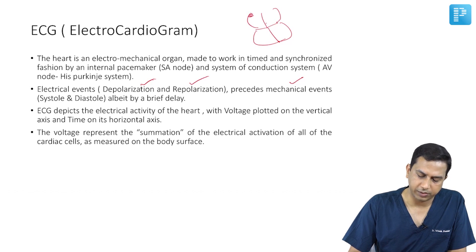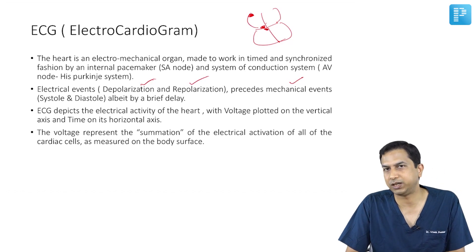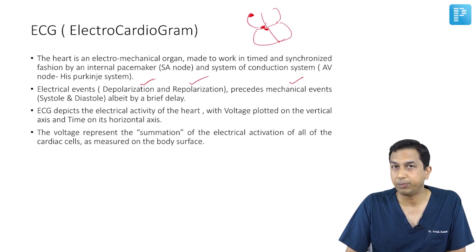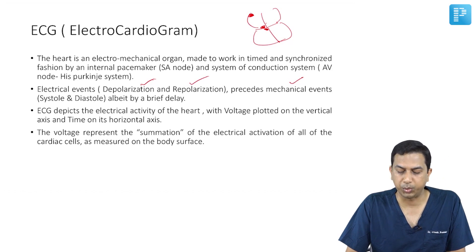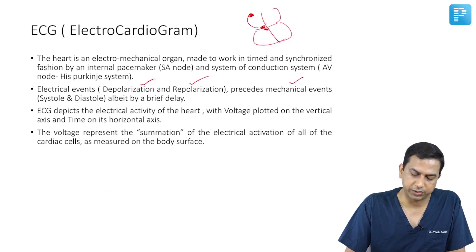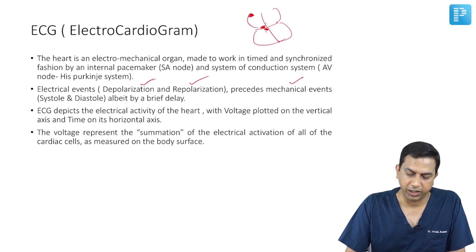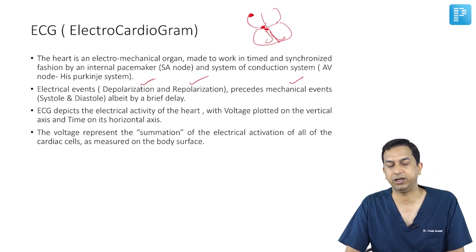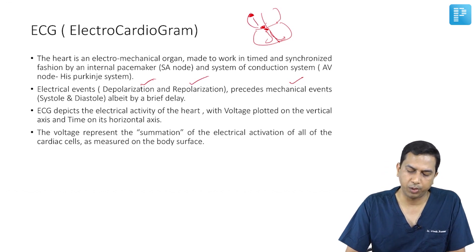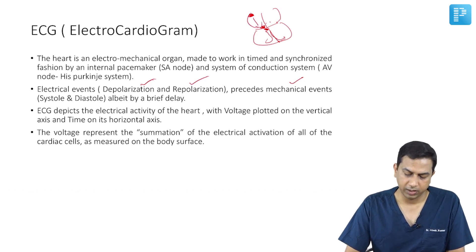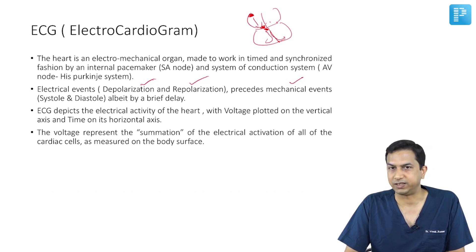Looking at the heart: the SA node is here, the AV node is here, and this portion — the His bundle and its penetrating part — is an electrical bridge into the ventricle. You have the right bundle, the left bundle, and the Purkinje system. This understanding is important for interpreting electrical activity in various disease states.